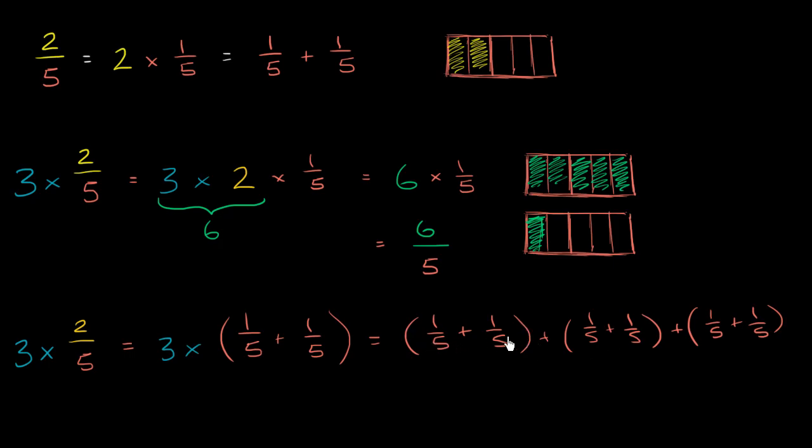Well, we literally have 6 fifths here. We could ignore the parentheses and just add all of these together. We, once again, have 1, 2, 3, 4, 5, 6 fifths. So, once again, this is equal to 6/5.